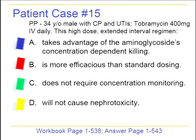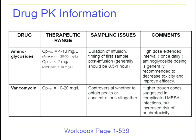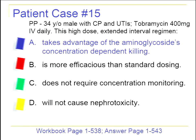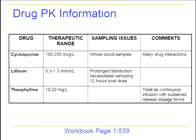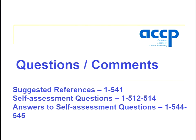Finally, patient case PP: a 34-year-old male with cerebral palsy and UTIs given tobramycin once-daily. Why do we use high-dose extended-interval aminoglycoside dosing? It takes advantage of aminoglycosides' concentration-dependent killing for improved efficacy, and it can decrease (though not eliminate) toxicity. It is not used because it requires no concentration monitoring or because it eliminates nephrotoxicity. More information on these therapeutically monitored drugs is in the handout. That concludes the presentation.